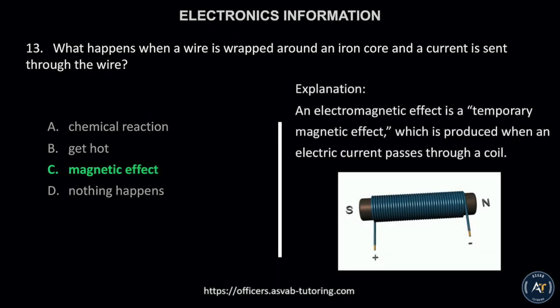This is because an electromagnetic effect is a temporary magnetic effect which is produced when an electric current passes through a coil.